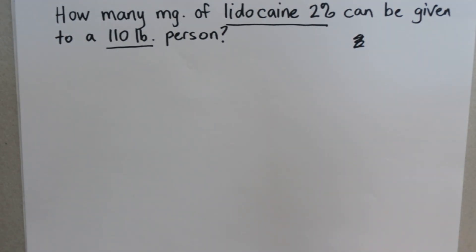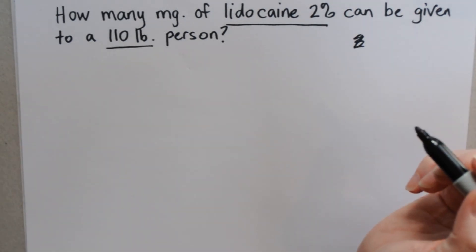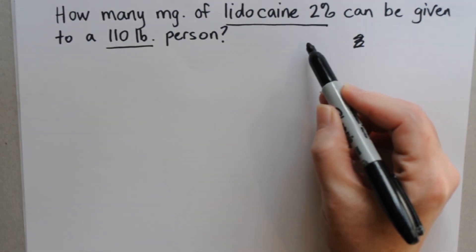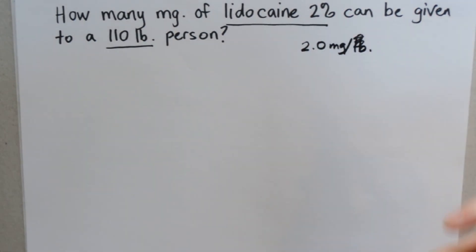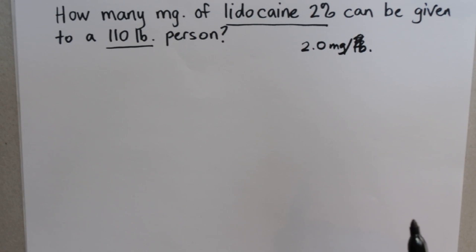When you're doing anesthetic calculations, there are a few things that you just need to memorize outright, and then there are some other things that you can use little formulas and patterns to help you remember — we will go over those in a separate video. For this one, you need to know that for lidocaine the maximum dose is calculated based on 2.0 milligrams per pound. If you're working in kilograms that's a whole different number, but we're going to stick with pounds for this example.